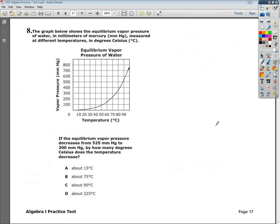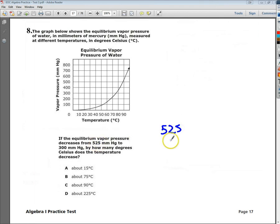We just have to pay specific attention to the question. The question says, if I go from 525 down to 300 millimeters of mercury, so I need to figure out where on the graph that's represented.